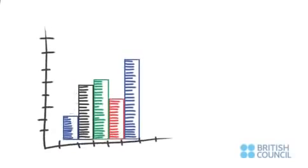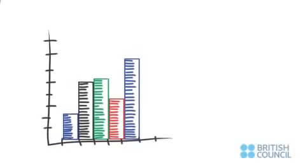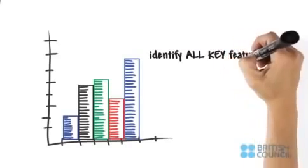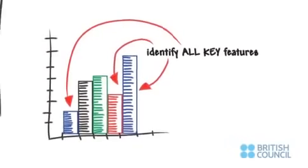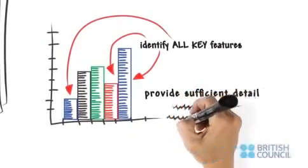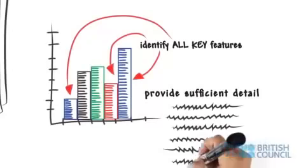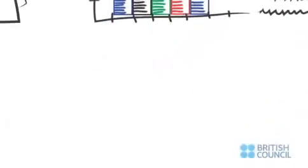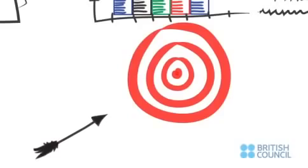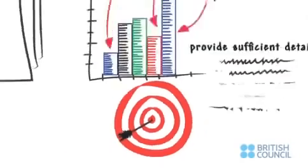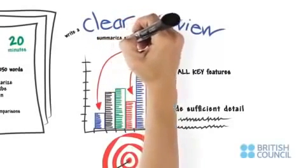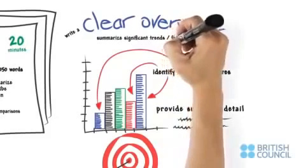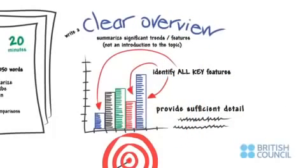Successfully negotiating this academic task 1 means you will need to identify all the key features in the diagram. You might lose marks if important details are left out. Provide sufficient detail for a meaningful explanation, not too much detail, not too little. Ensure accuracy when referring to data or describing trends or processes. It's important to write a clear overview. This means summarizing the most significant trends or features from the data or information in the diagram. This is not simply an introduction to the topic. That's a common mistake.